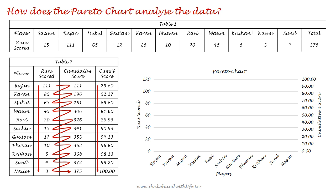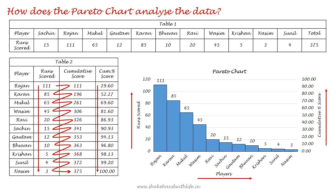To draw the Pareto chart, take players on the primary horizontal axis, runs scored on the primary vertical axis, and cumulative percentage score on the secondary vertical axis. The runs scored by each individual player are shown by the bar chart in descending order.